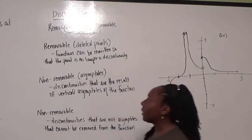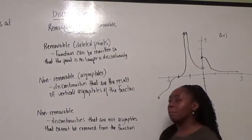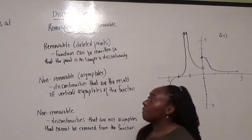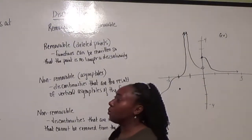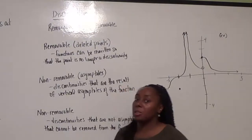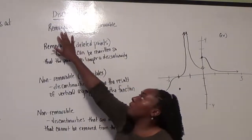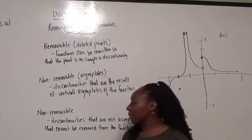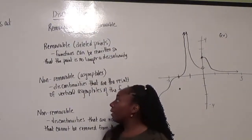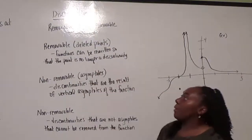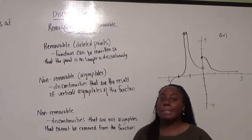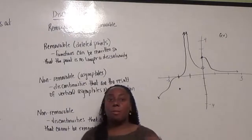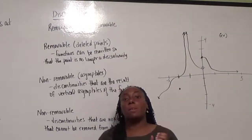Looking at that notion of continuity, we can then look at what it means to be discontinuous. For discontinuous, we have two ways a function can be discontinuous: removable discontinuities and non-removable discontinuities. A removable discontinuity is what we consider a deleted point. If we look at the graph, it's a point that can be removed and it just leaves a hole in the graph.